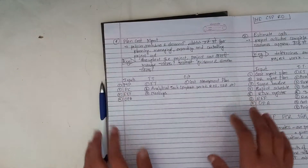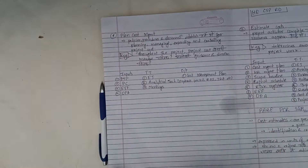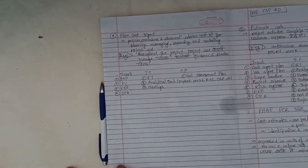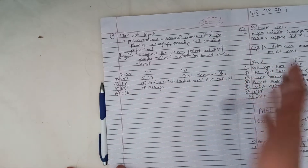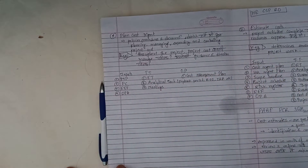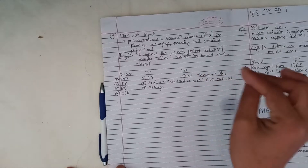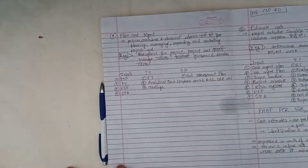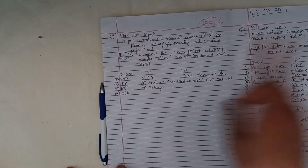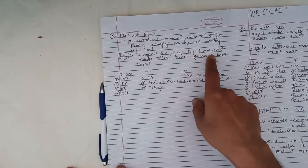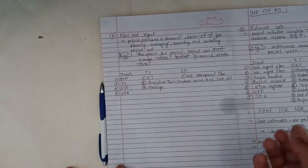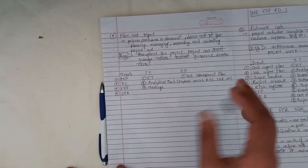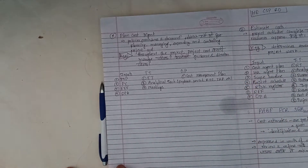Let's learn about plan cost management. Plan cost management is going to be a policy, procedure, document to establish for planning, managing, expending, and controlling project cost. Throughout the project, project costs are re-managed. Project cost management is going to be a policy, and the guidance is going to be a policy.